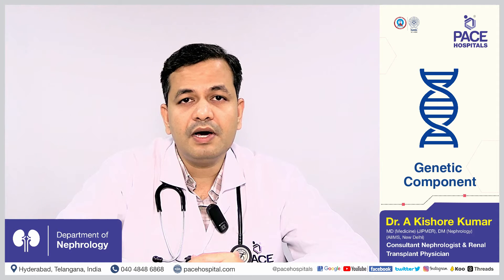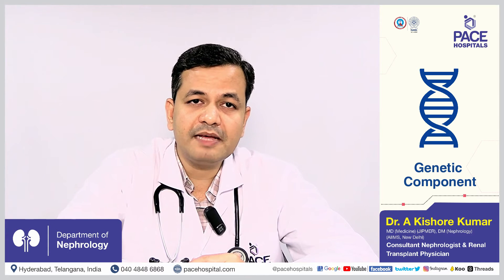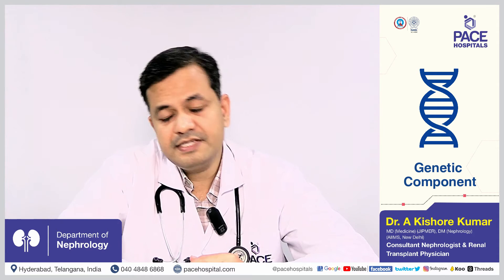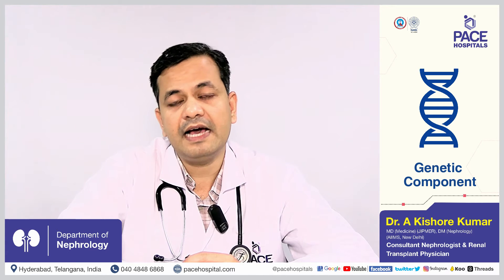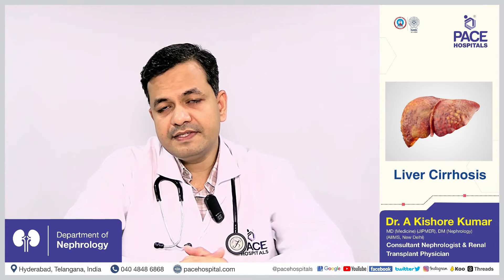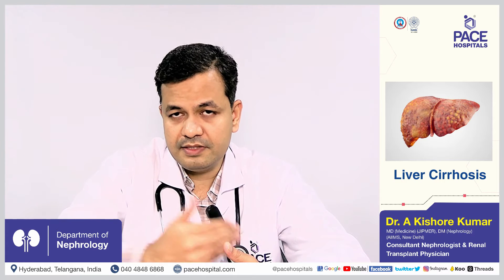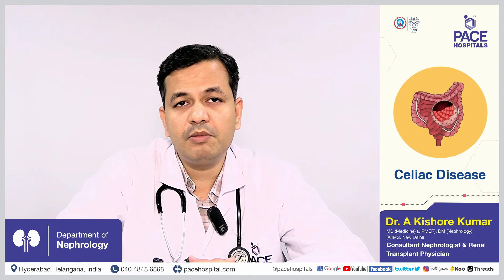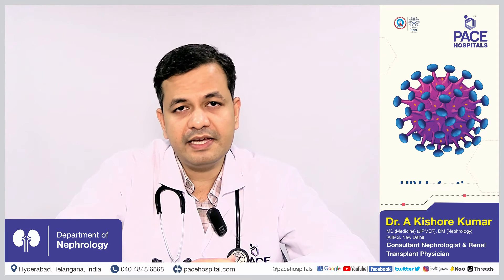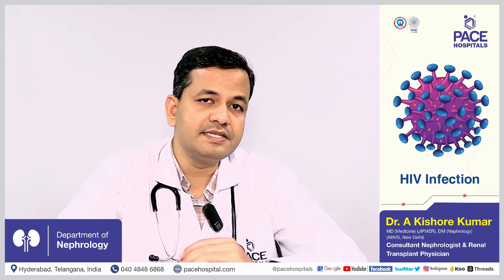The second risk factor is Asian descent — people of Asian descent are at more risk of IgA nephropathy. Males are also at more risk. There is also secondary IgA nephropathy, where IgA nephropathy develops secondary to another illness — such as liver cirrhosis, celiac disease (a problem related to the intestines), HIV infection, or other infections — which is called secondary IgA nephropathy.